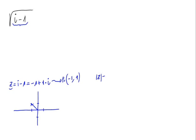The modulus of the complex number z is the distance from the origin to the point minus 1, 1. That is equal to the square root of (minus 1) squared plus 1 squared, which equals the square root of 1 plus 1, equal to the square root of 2.